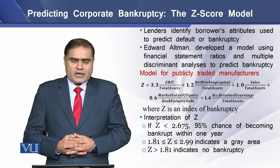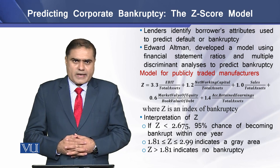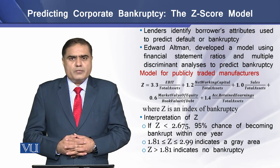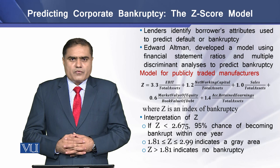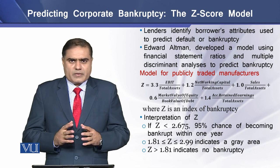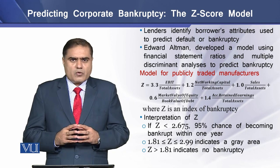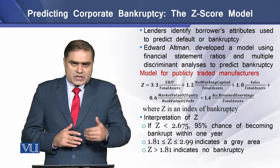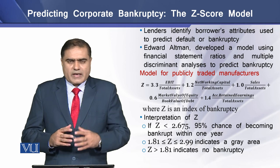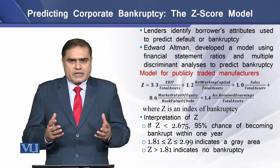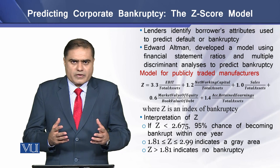Edward Altman developed a model using financial statement ratios and discriminant analysis to predict bankruptcy. For that purpose, he classified his model for publicly traded manufacturing firms and a model for private and non-manufacturing firms.